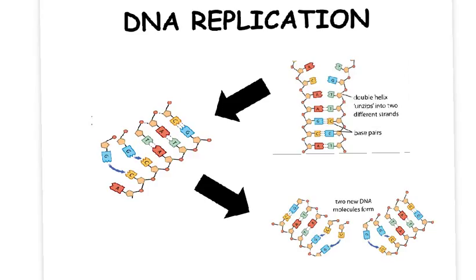In the nucleus of most of your body cells, you have two sets of chromosomes arranged as 23 matching pairs. These are described as being diploid cells. Before a cell divides, its genetic material has to be copied so that each new cell has a complete set of genetic information. Therefore, each chromosome, which is made of one molecule of DNA, must be copied. This process is called DNA replication.